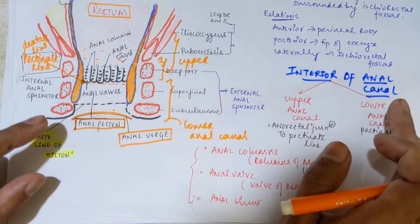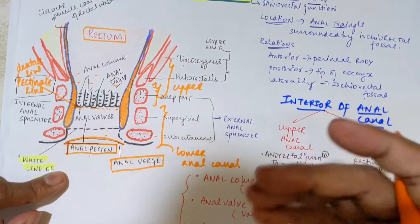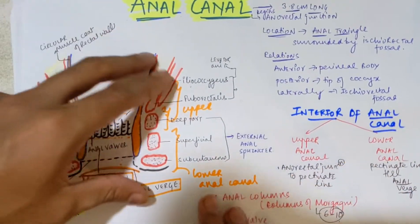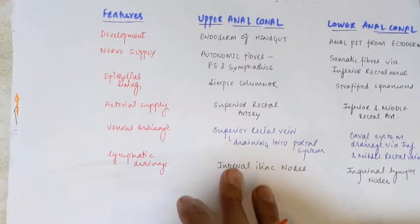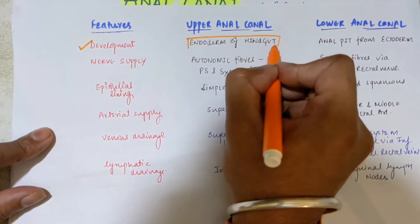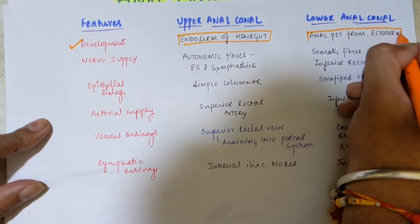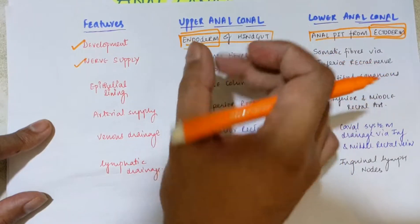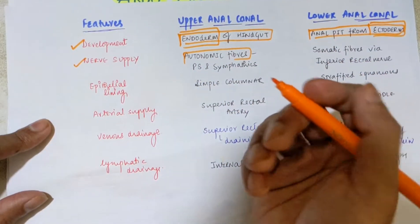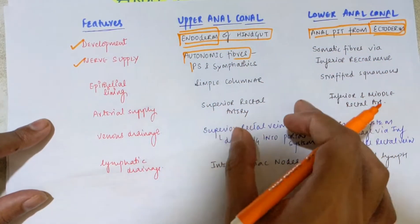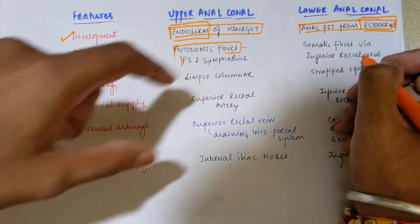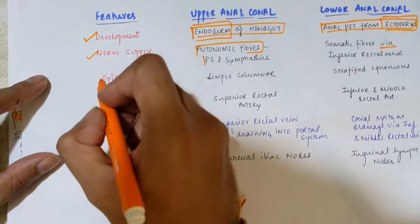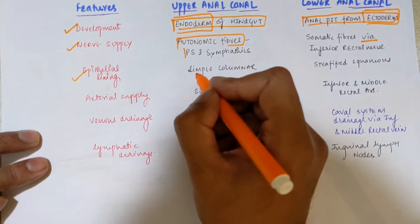There are important differences between the upper and lower anal canal regarding development, nerve supply, blood supply, and lymphatic drainage. In terms of development, the upper anal canal is derived from the endoderm of the hindgut, while the lower anal canal develops from the anal pit, which is of ectodermal origin. Regarding nerve supply, the upper anal canal is supplied by autonomic fibers — both parasympathetic and sympathetic — which are insensitive to pain and temperature, whereas the lower anal canal is supplied by somatic fibers via the inferior rectal nerves, which are sensitive to pain and temperature.